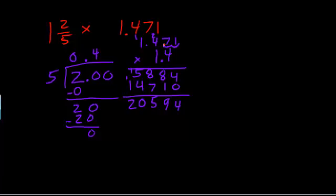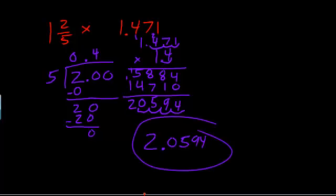And I have 1, 2, 3, 4 decimal places. So I need 1, 2, 3, 4 decimal places. So my answer would be 2.0594. I'll do my final answer there.